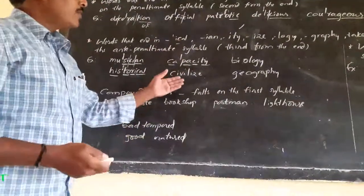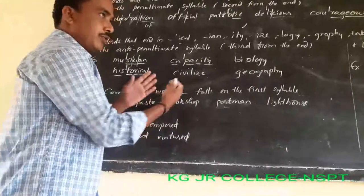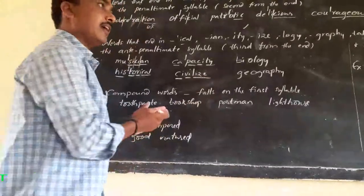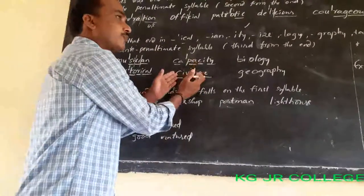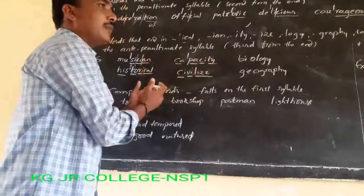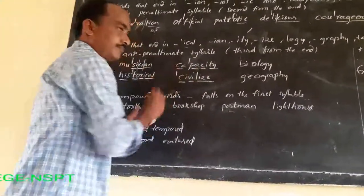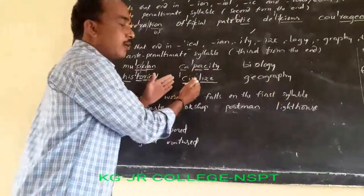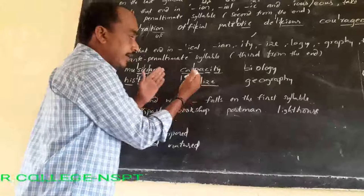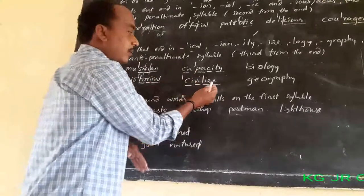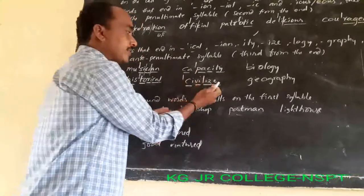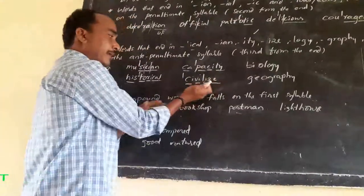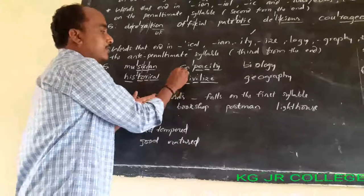Next: 'civilize'. 'Civilize' — count the syllables: civ-il-ize — three parts, three syllables. The last to third syllable means it becomes the first one. So the stress marker (vertical bar) goes at the beginning: CIV-il-ize. Since there are only three syllables, the antepenultimate syllable is the first one.